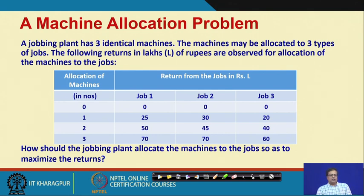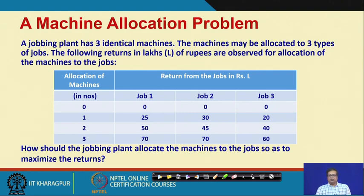The machine allocation problem is like this: there is a jobbing plant which has three identical machines. What a jobbing plant does is it performs a set of jobs which are not fixed. It gets all types of jobs and would like to do those jobs which give them maximum return. The plant has three identical machines that may be allocated to three types of jobs. The following returns in lakhs of rupees are observed for allocation of the machines to the jobs.